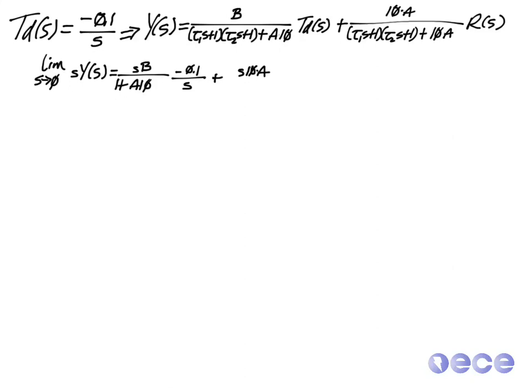So let's go ahead and use the final value theorem and add in the actual inputs that we're providing. So we end up with a few s cancellations, and after we've chosen B equal to 50 and A equal to 10, a few more s cancellations.